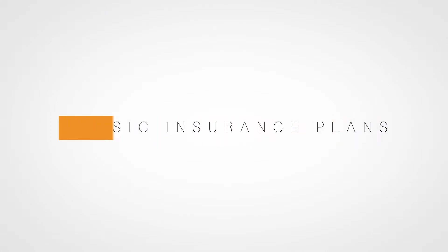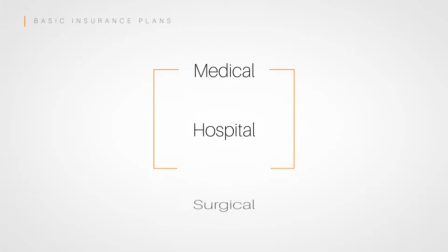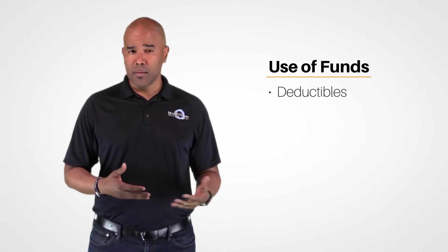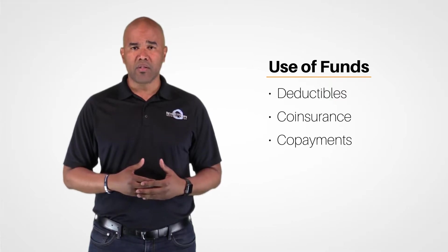In the last lesson, we started you off with a look at basic insurance plans. There are three basic options in terms of coverage: basic medical, hospital, and surgical. These are insufficient in today's world and are not at all comprehensive in nature. They still have a place because these policies put money directly into the insurance pocket and can be used for any purpose. Most use the funds to pay for things like deductibles, coinsurance, and copayments associated with their comprehensive medical plans.